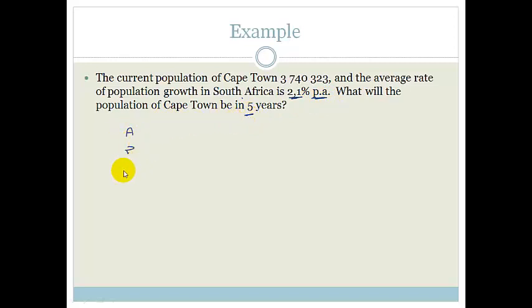So let's have a look at this. We've got A, P, I, and N. They want to know what we're going to get out. So that's what they're asking. The principle is what we started with originally, which in this case is 3,740,323. Our interest is always in the decimal. So it's 2.1 divided by 100, which is 0.021. And the number is 5.